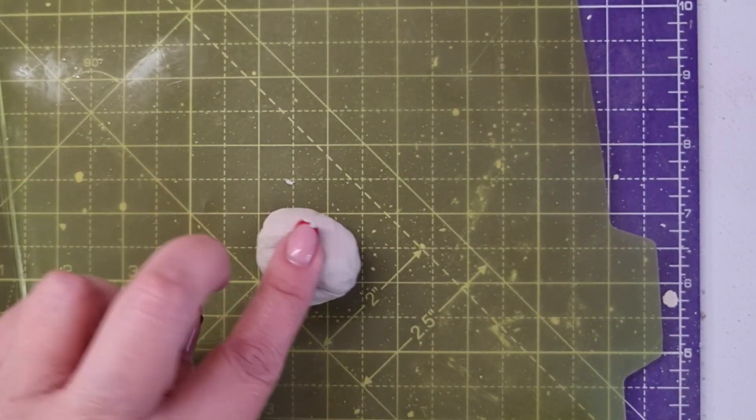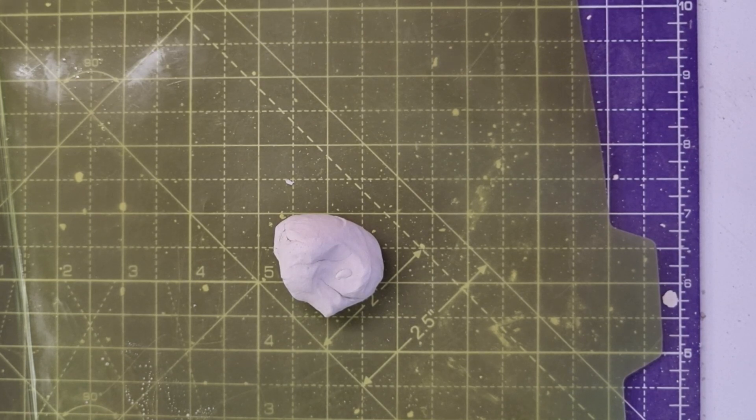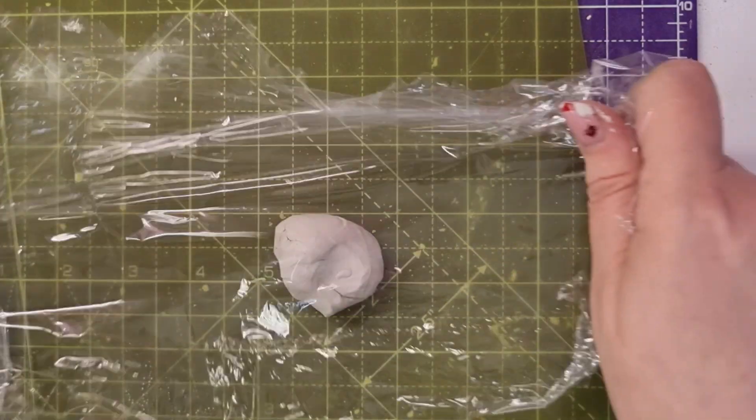I'm going to wrap it in some cling film, which is a plastic food wrap, and then I'm going to put it in an airtight pot with a baby wipe or some damp kitchen roll. I'm just going to let that sit for 24 hours before I use it.